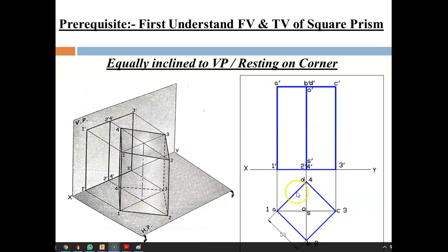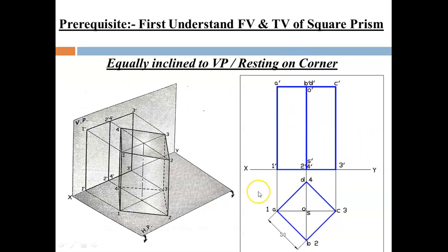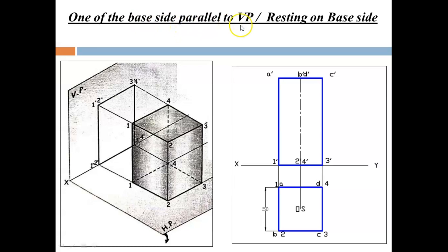Considering this position, you have to draw a square first where all lines make the same angle with the XY line, then draw the front view according to the axis height. The second condition is one of the base sides parallel to the VP, or resting on a base side. In this case, base side two-three or one-four is parallel with the XY line, meaning parallel with the VP. Lines one-two and three-four are perpendicular to the VP. It is called resting on a base side because when tilting, the prism rests on one of its base sides — three-four or one-two.